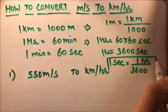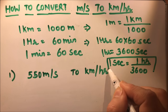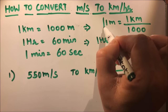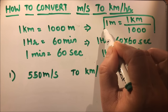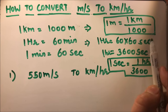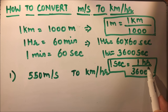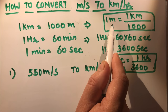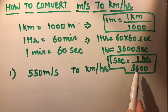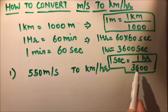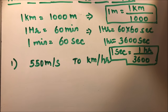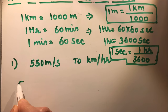So these are the things we are going to use here. In place of seconds, we are going to write one hour over 3600, and in place of meters, we are going to write kilometers. Because we want kilometers and hours, but we have meters and seconds. We will find these values from the basic relations and then put them in.